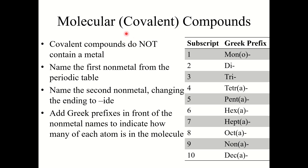Let's talk about the second half of this section. We're going to start with the nomenclature of molecular or covalent compounds. Covalent compounds — remember, these are compounds that do not contain a metal. So when you go to name them, it's fairly similar to the ionic nomenclature we saw in the first half.